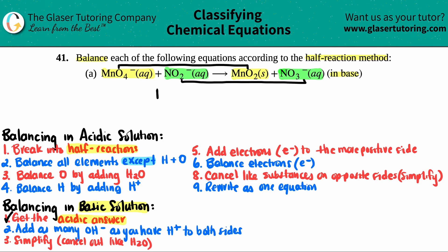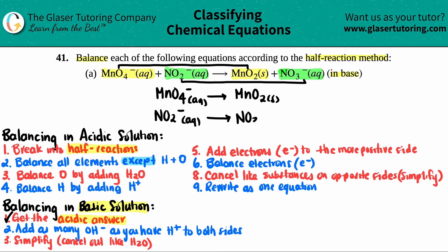So we have MnO4⁻ (aqueous) yields MnO2 (solid) as the first half reaction. And then we have NO2⁻ (aqueous) yields NO3⁻ (aqueous) as the second half reaction. First part done.